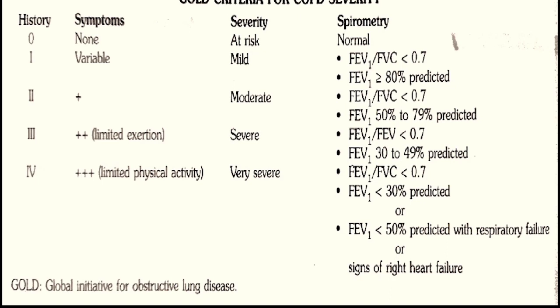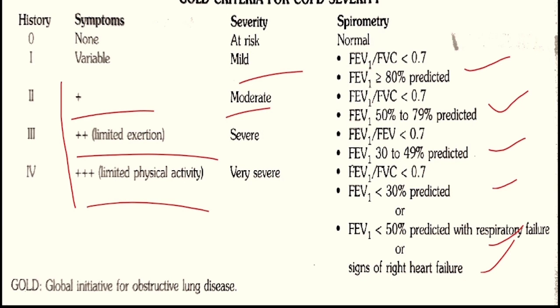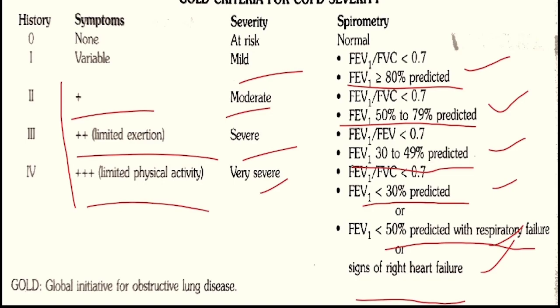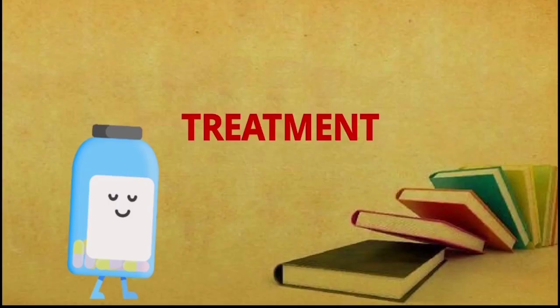The GOLD criteria for COPD severity — GOLD stands for Global Initiative for Obstructive Lung Disease. Mild COPD: FEV1 ≥80% predicted. Moderate: FEV1 50–79%. Severe: FEV1 30–49%. Very severe: FEV1 <30%, or <50% with respiratory failure or signs of heart failure. Remember these four grades and their FEV1 thresholds.